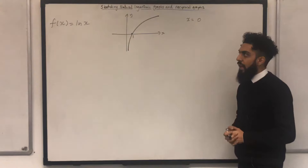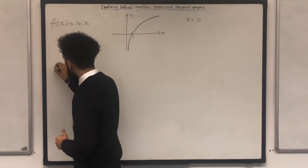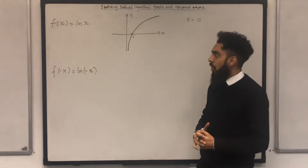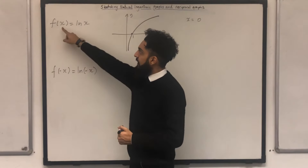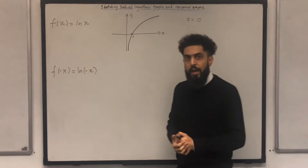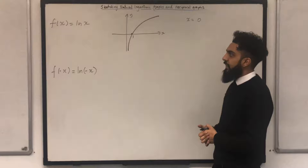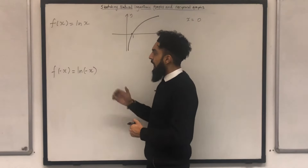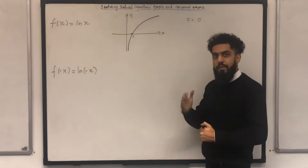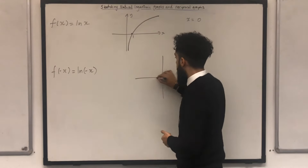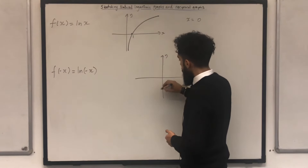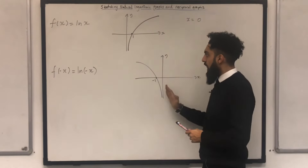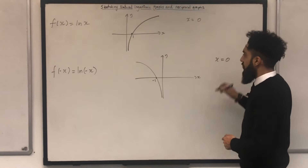Now I want to look at the function f(-x). f(-x) is equal to ln(-x); all I have to do is replace the x's with -x. The graph of f(-x) is just the graph of f(x) reflected in the y-axis. So to sketch f(-x) = ln(-x), I take the graph of ln(x) and reflect it in the y-axis. The x-intercept becomes -1, and the equation of the vertical asymptote remains x = 0.